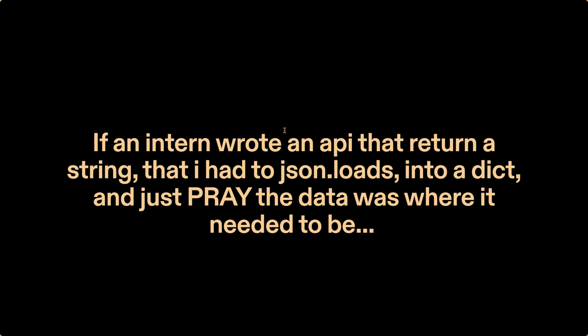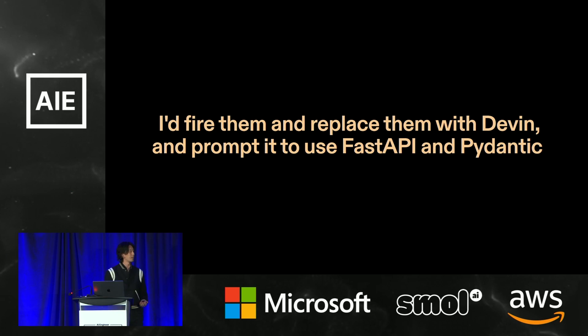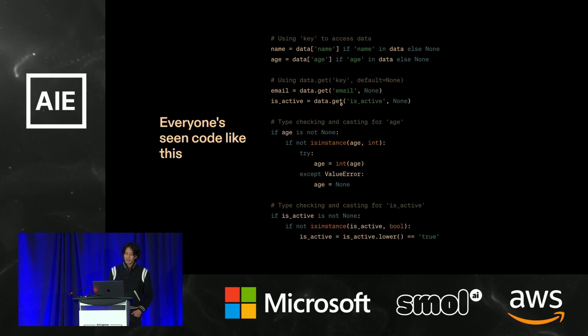The problem has always been the fact that if I had hired an intern to write an API for me, and that API returns a string that I have to JSON load into a dictionary, and then just pray that the data was still there to begin with, I would be pretty pissed off. I would probably just fire them, replace them with Devon, and just prompt it to use FastAPI and Pydantic. I'm really tired of writing code like this — the kind of code we wrote when we had to work with things like ChatGPT 3.